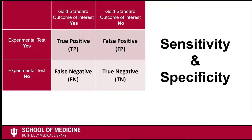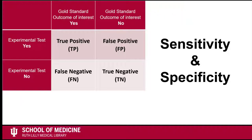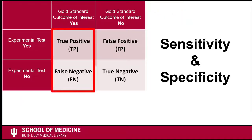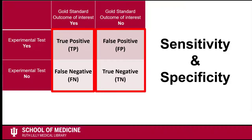To help you remember, on a 2x2 table with the gold standard at the top and the experimental test on the left side, the numbers used to calculate sensitivity and specificity are vertical, with sensitivity on the left column and specificity on the right column.